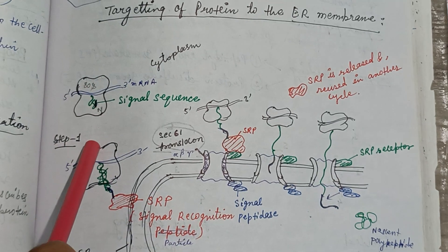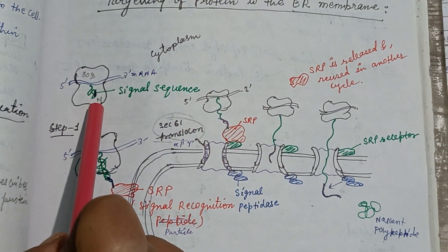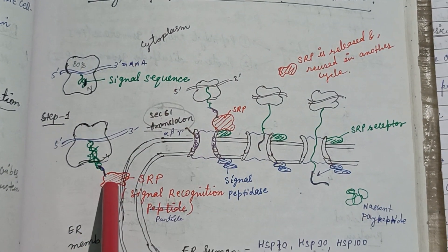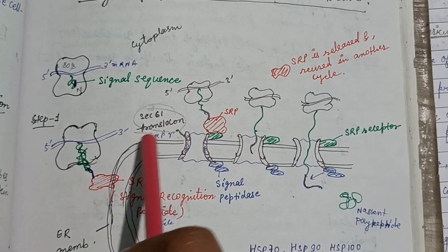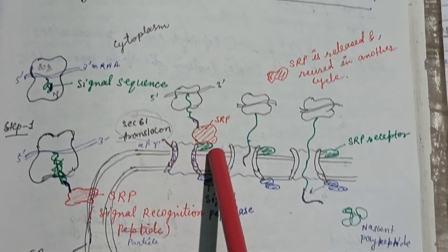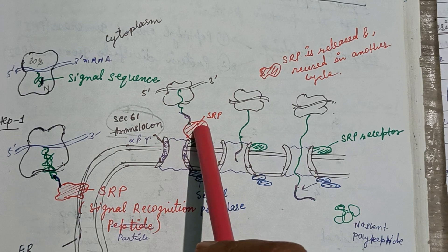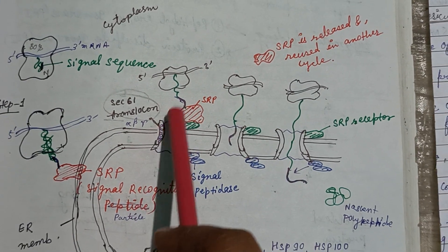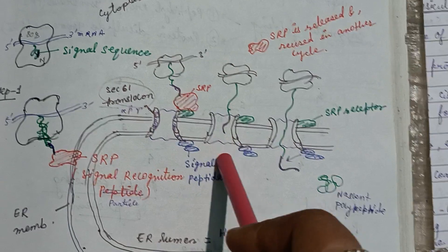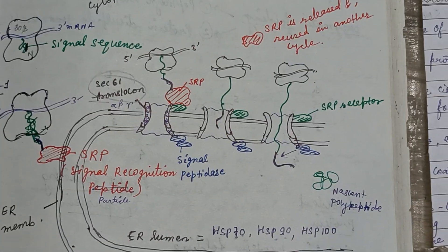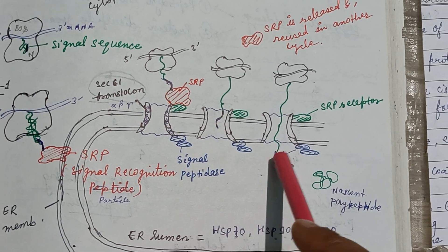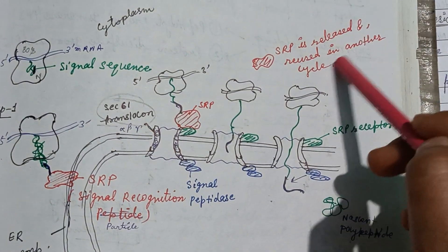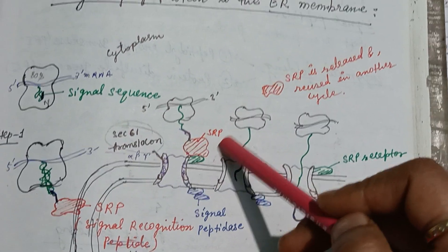In this figure, the ribosome has two subunits and there is a signal sequence at the N-terminus of the growing polypeptide chain. It binds to the SRP receptor. SRP — the signal recognition particle present in the cytosol — binds with the SRP receptor, which is visible in green. The SRP receptor bound to SRP has GTP bound. The SEC61 translocon present in the ER membrane transfers the signal sequence along with the growing polypeptide chain into the ER lumen, and then signal peptidase, shown in blue, cleaves the signal sequence. SRP is then released and reused in another cycle, and GTP is hydrolyzed to GDP.